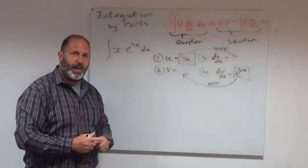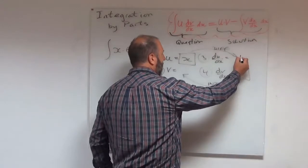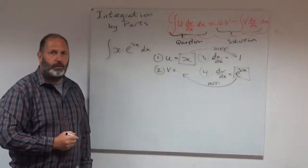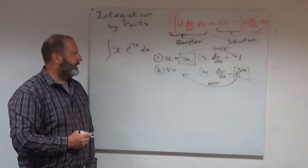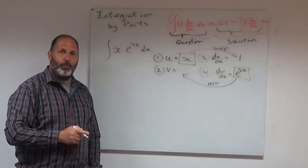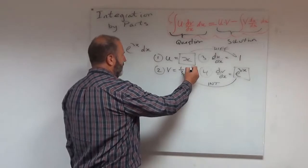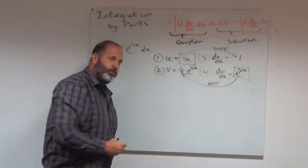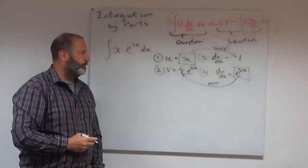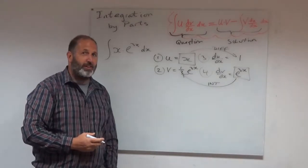So if I differentiate x, we get 1. And if I integrate e to the 3x, I get 1 over 3 e to the 3x. So I get 1 over 3 e to the 3x. The hard work, I think, is done.